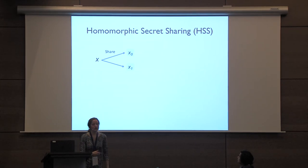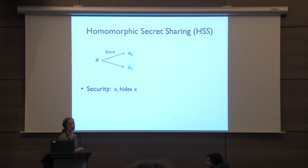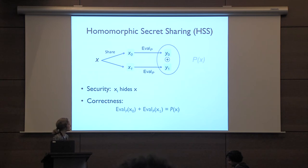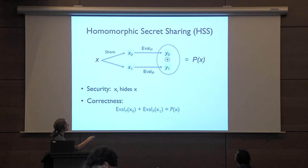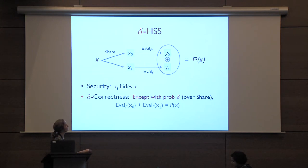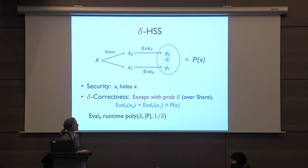So what is homomorphic secret sharing? This is an extension of standard secret sharing: some secret X is split into two shares, with standard security so that seeing one share reveals nothing about X. The homomorphic aspect is that you can locally compute on a single share, evaluating some program P such that the outputs have an additive reconstruction. An interesting relaxation is Delta-HSS: homomorphic secret sharing with some probability of error Delta, taken over the randomness of the sharing procedure, where the evaluation runtime is allowed to scale with one over Delta.